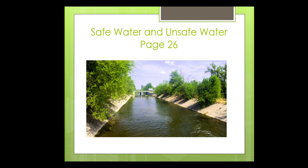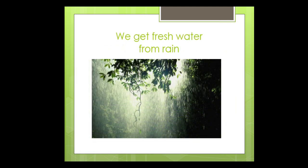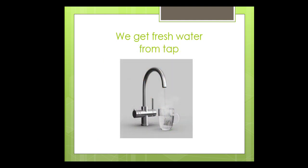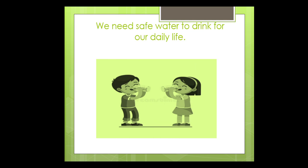In our previous class, we learned about safe water and unsafe water. We get two types of water: fresh water and salt water. We get fresh water from rain, from wells, from tap, from ponds, rivers, etc. On the other hand, sea water is salty and we cannot drink it. Not all water is safe — we need safe water to drink for our daily life.